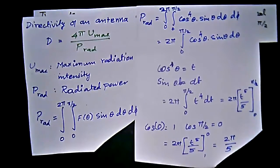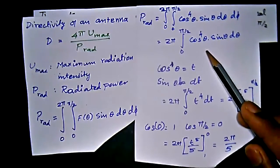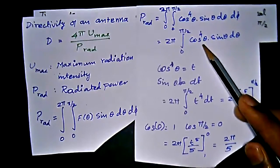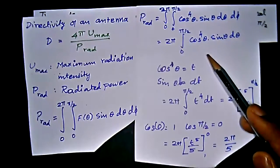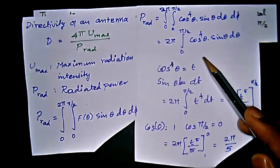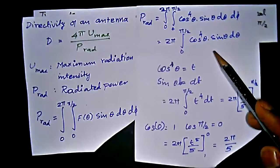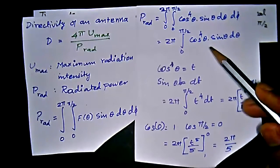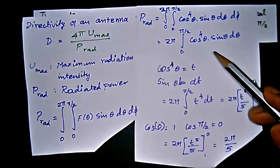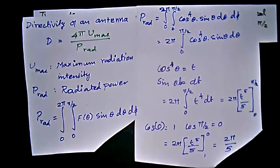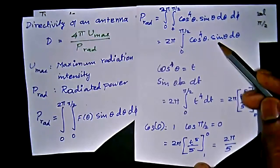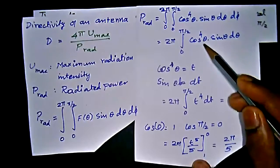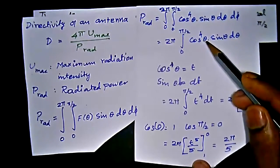We use the substitution method to reduce the complexity, because we have a trigonometric function with power 4. We don't have a straightforward integral for cos⁴θ directly using the cos²θ identity, which would be more complicated. So instead we let cos θ = t. Substituting, cos⁴θ becomes t⁴.